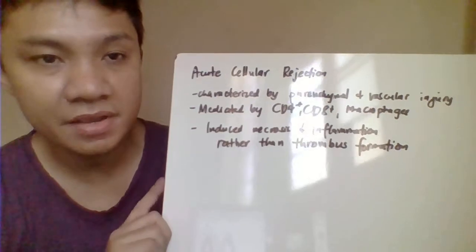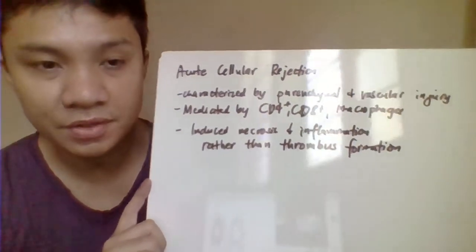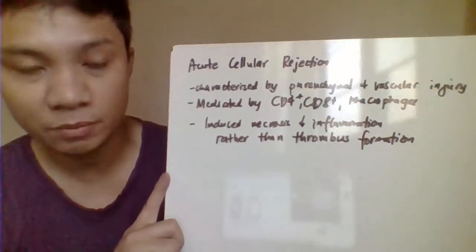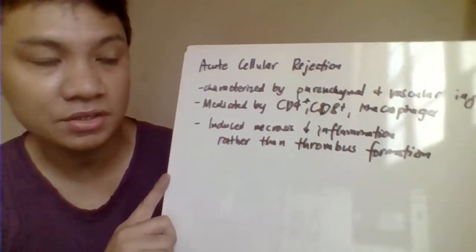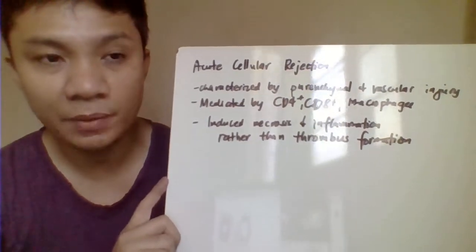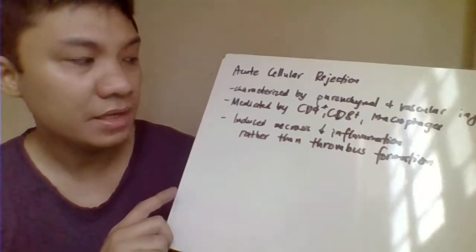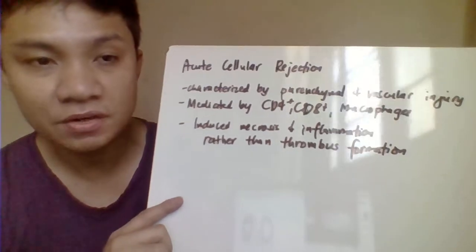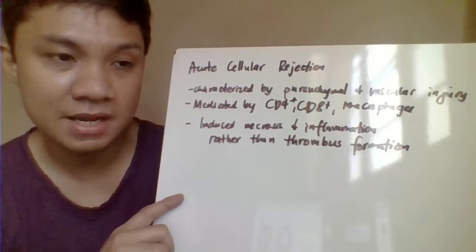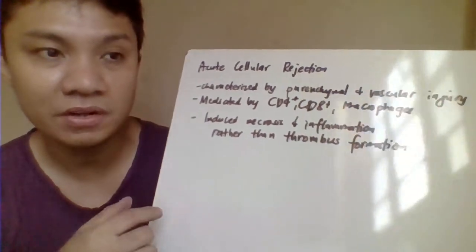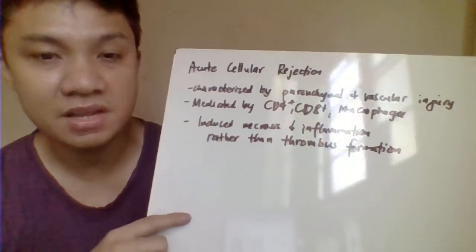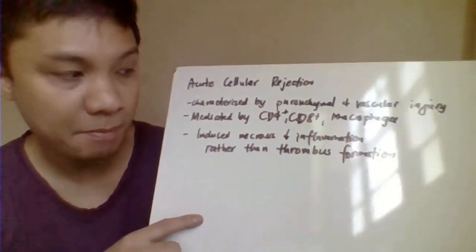Acute rejection occurs 7 to 21 days after transplantation and presents with manifestations similar to hyperacute rejection. It is mediated by activation of CD4, CD8, and macrophages. It is characterized by necrosis and inflammation, but unlike hyperacute rejection, it does not involve thrombosis.